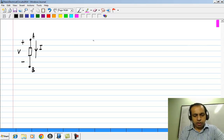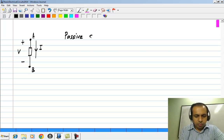There is a particular convention that is used for defining the current and voltage that is known as the passive sign convention.